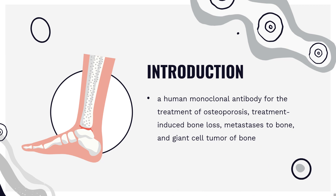Prolia is indicated for the treatment of postmenopausal women with osteoporosis at high risk for fracture. It reduces the incidence of vertebral, nonvertebral, and hip fractures. Prolia is also indicated as a treatment to increase bone mass in women at high risk for fracture receiving adjuvant aromatase inhibitor therapy for breast cancer. It can also be used in men with osteoporosis at high risk for fracture, or in men receiving androgen deprivation therapy for non-metastatic prostate cancer to increase bone mass.